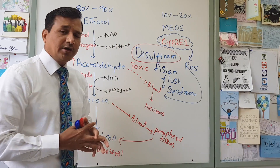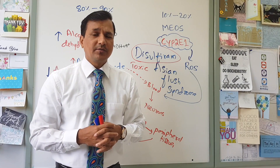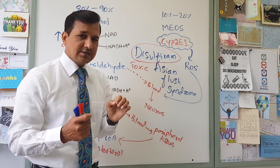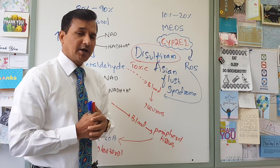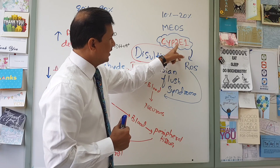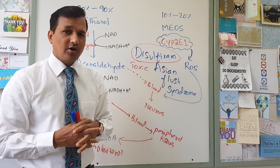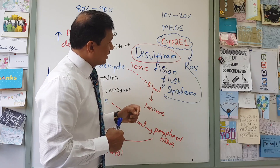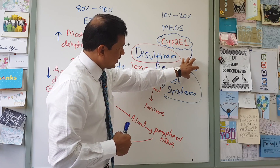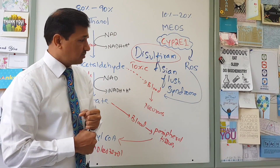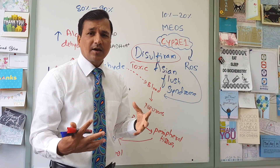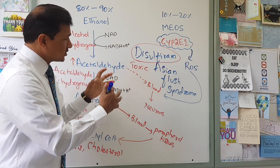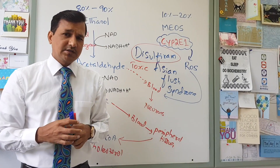Let us move on to see how 10 to 20% of alcohol is metabolized in the microsomal ethanol oxidizing system. MEOS is the microsomal ethanol oxidizing system, and the main enzyme involved in metabolizing alcohol is cytochrome P450 2E1, which is responsible for oxidizing alcohol in the smooth endoplasmic reticulum. While alcohol is metabolized by cytochrome P450, there is also production of reactive oxygen species, which can damage DNA, proteins, and overall biomolecules. Together, reactive oxygen species and acetaldehyde can damage our biomolecules.